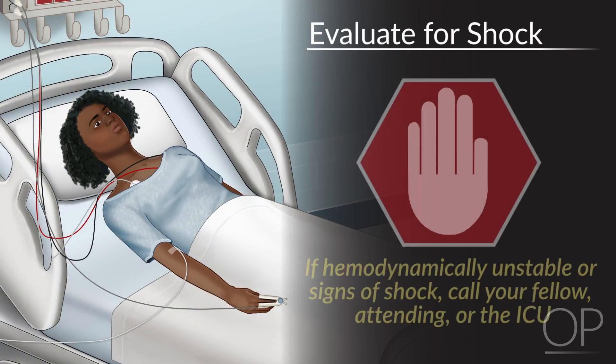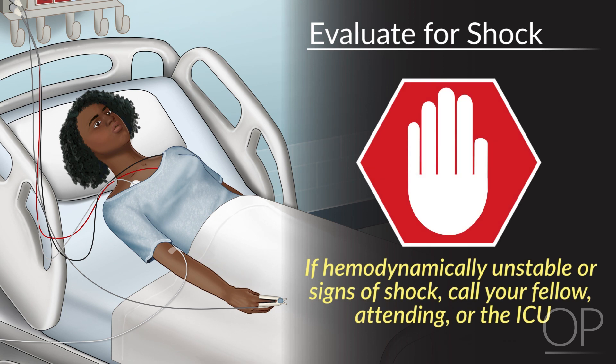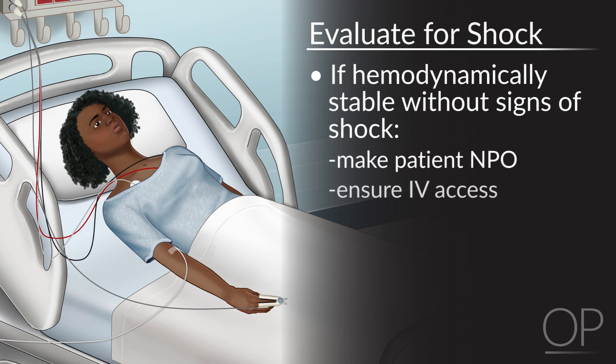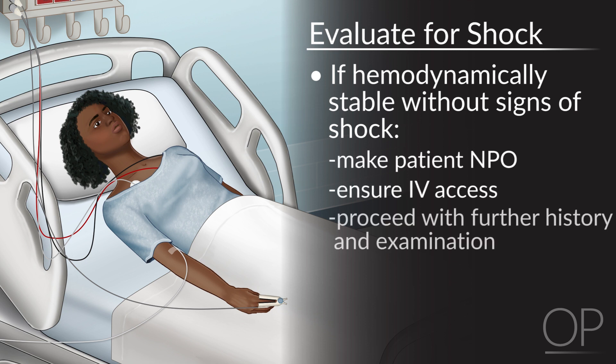If your patient is hemodynamically unstable or showing signs of shock, this is a red flag, and you should call for backup including your fellow, attending, or the ICU. However, if your patient is hemodynamically stable without signs of shock, you should make them NPO, ensure that they have IV access, and proceed with further history and examination.